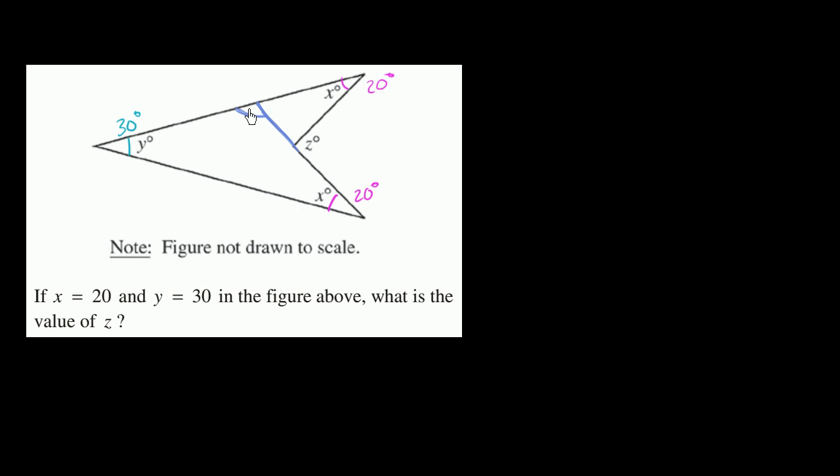And what is that third angle going to be? Well, 30 degrees plus this angle plus 20 degrees is going to be 180, or another way to think about it, this is going to be 180 degrees minus 30 minus 20, or 180 degrees minus 50. So this is going to be 130 degrees.